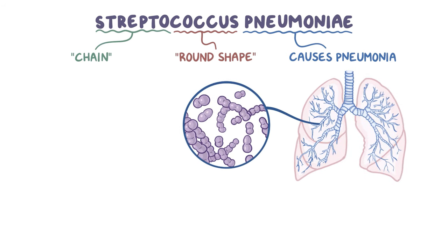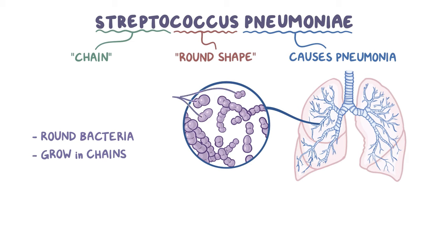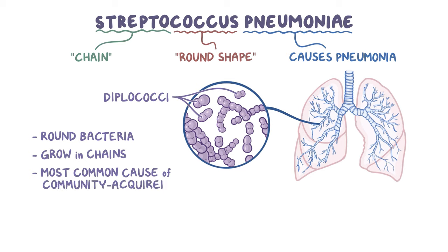Strep pneumoniae are round bacteria that tend to grow in chains, usually in lancet-looking pairs called diplococci. They're the most common cause of community-acquired pneumonia, meaning pneumonia acquired somewhere other than the hospital.